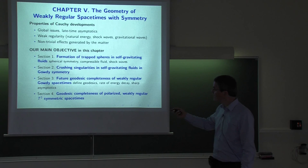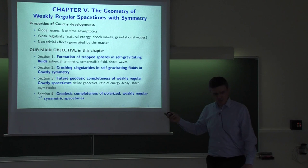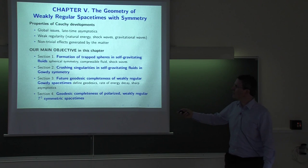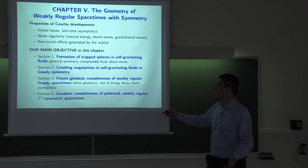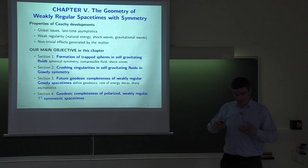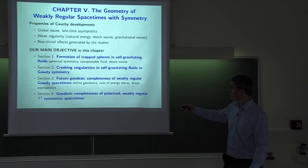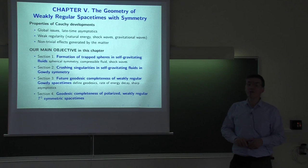These two results include the matter, and the next two results will be for Ricci flat manifolds. We will prove the future geodesic completeness of weakly regular Gowdy spacetimes. To address this question of completeness, you need to be able to define geodesics under the assumption that the metric is only weakly regular. To do this analysis of late-time asymptotics, you have to understand how the energy decays, and not only how it decays but in a rather sharp way — you need the rate of decay of energy, sharp asymptotics, and it's only when you have those that you can deduce the completeness of the spacetime.